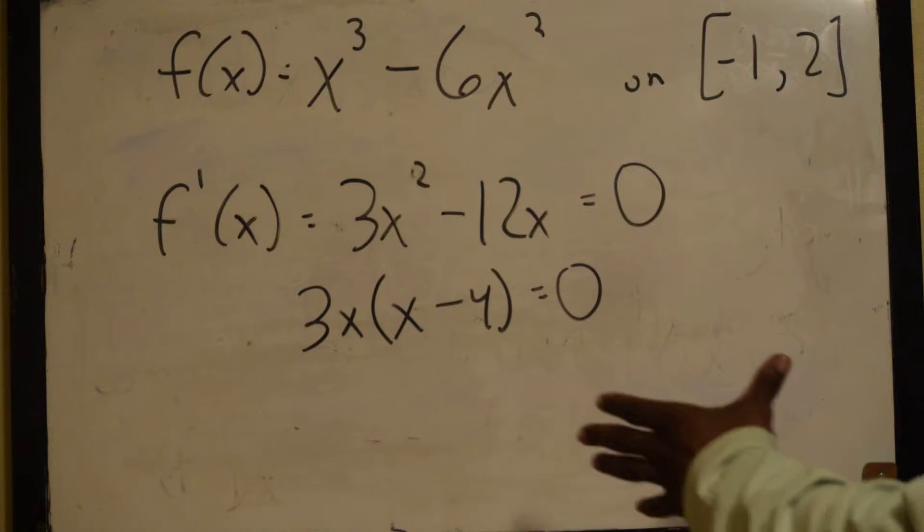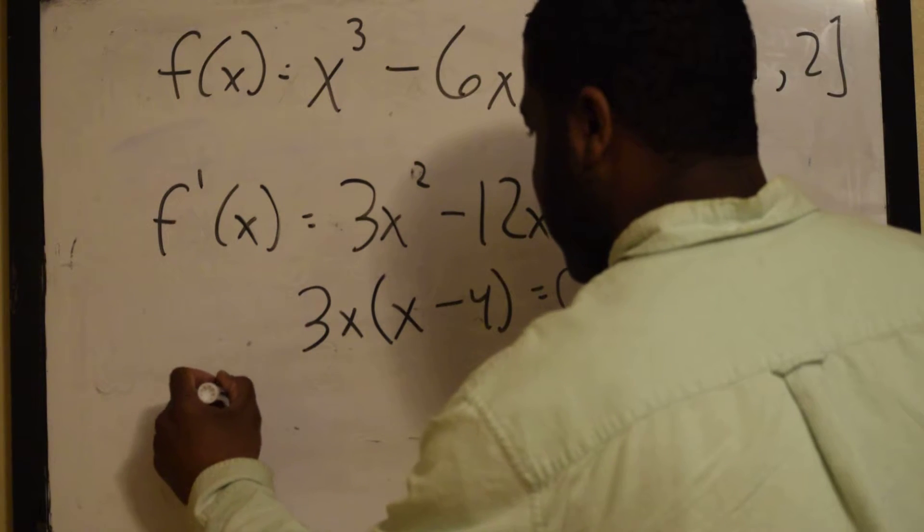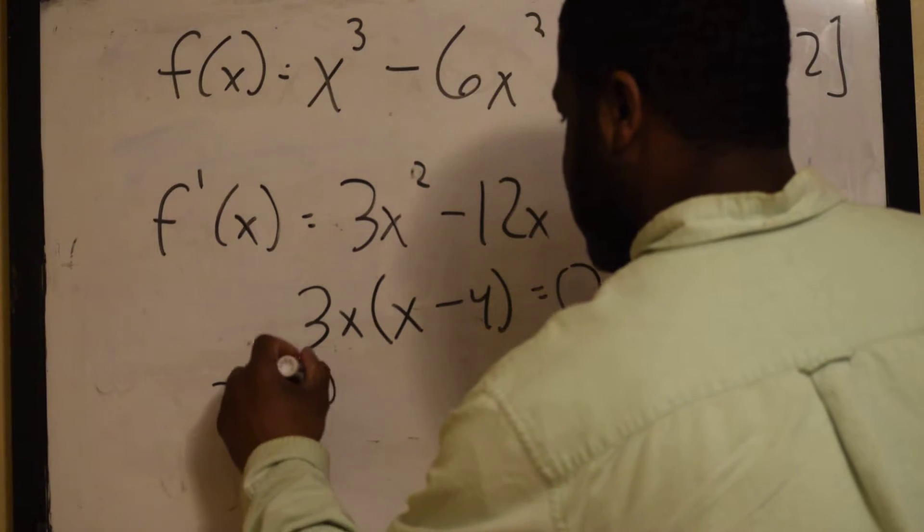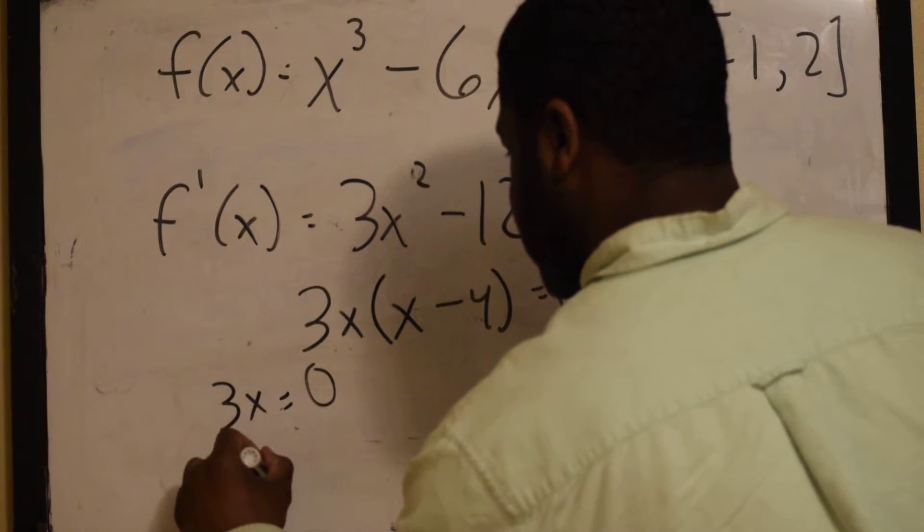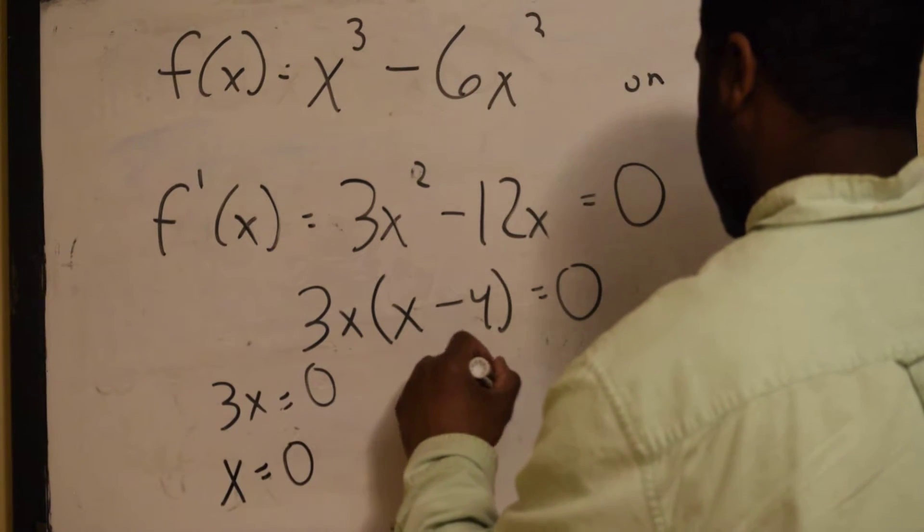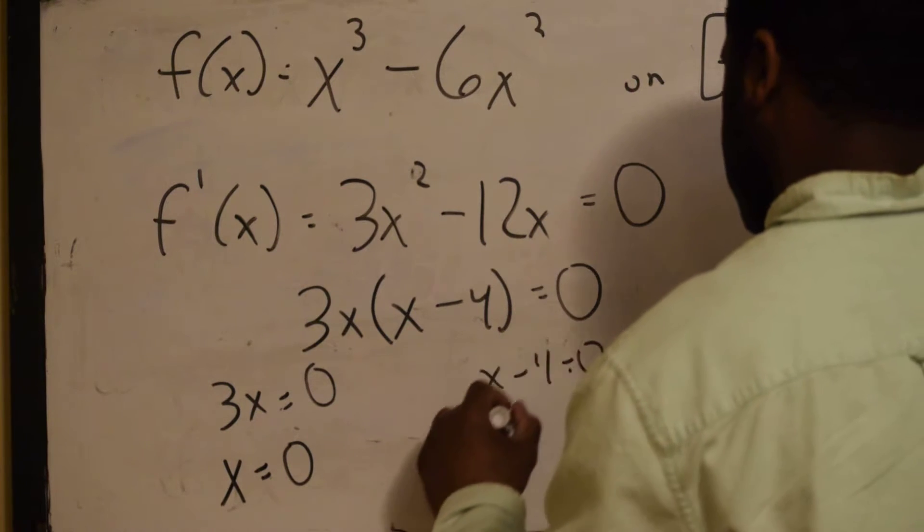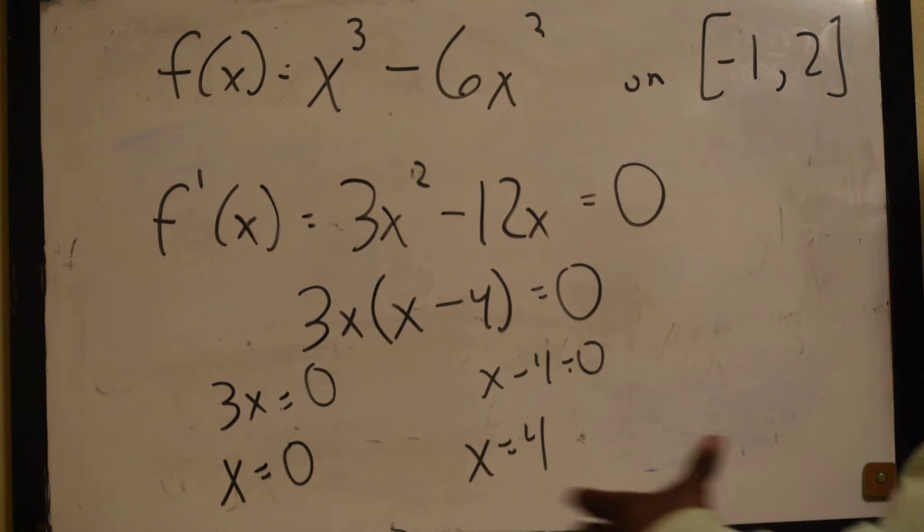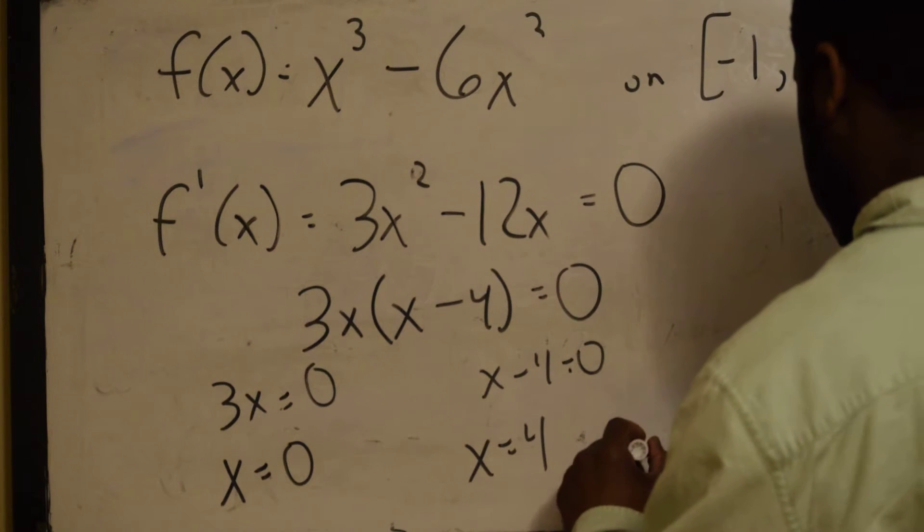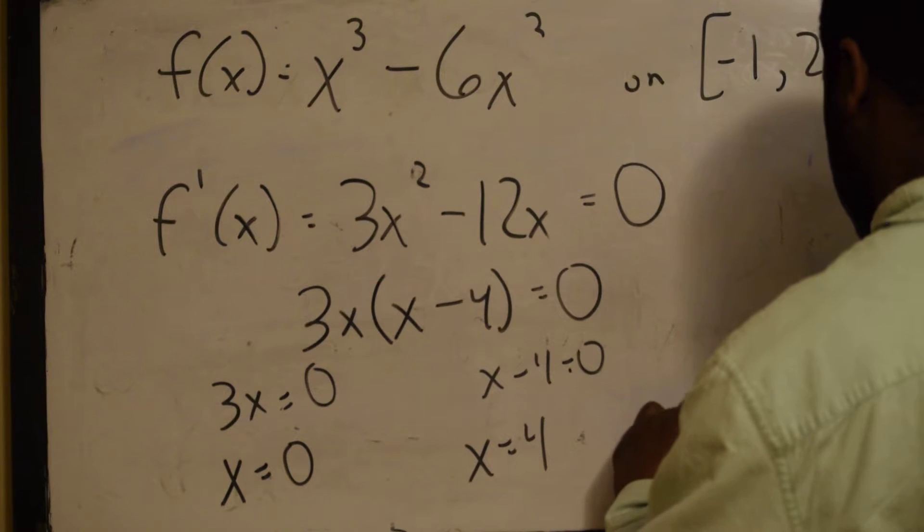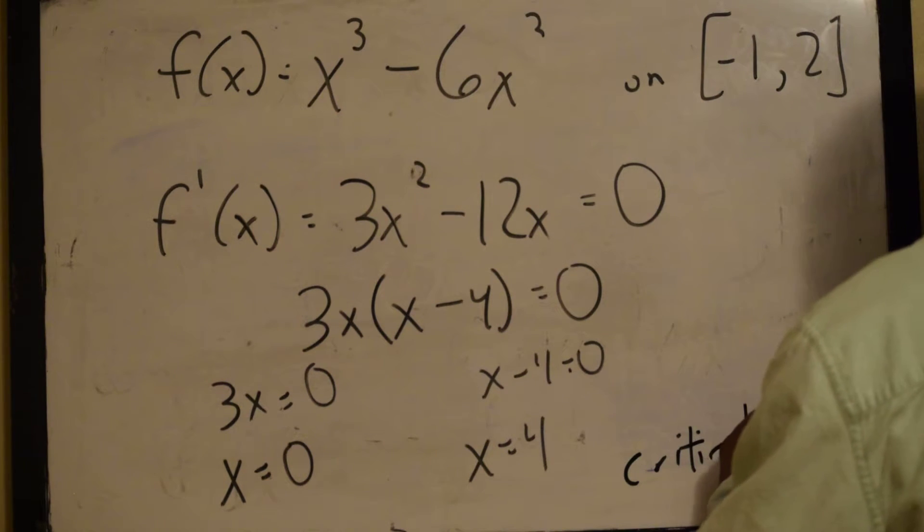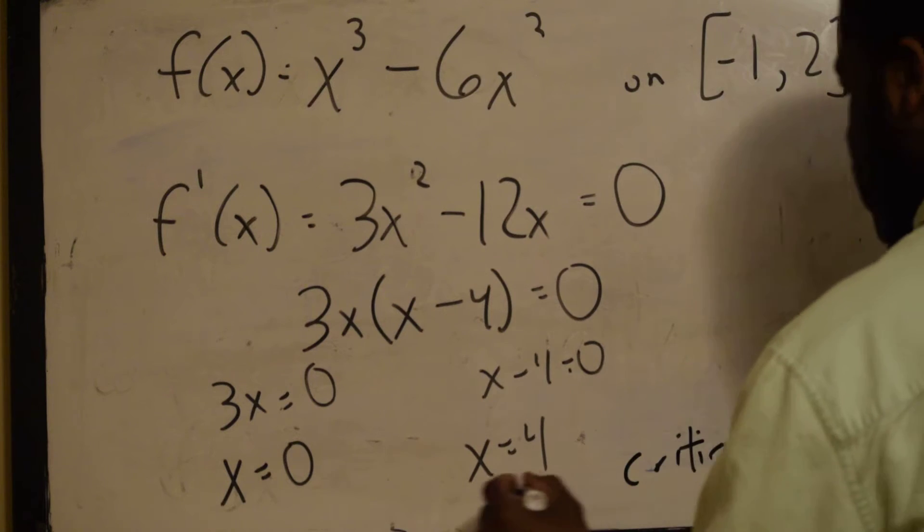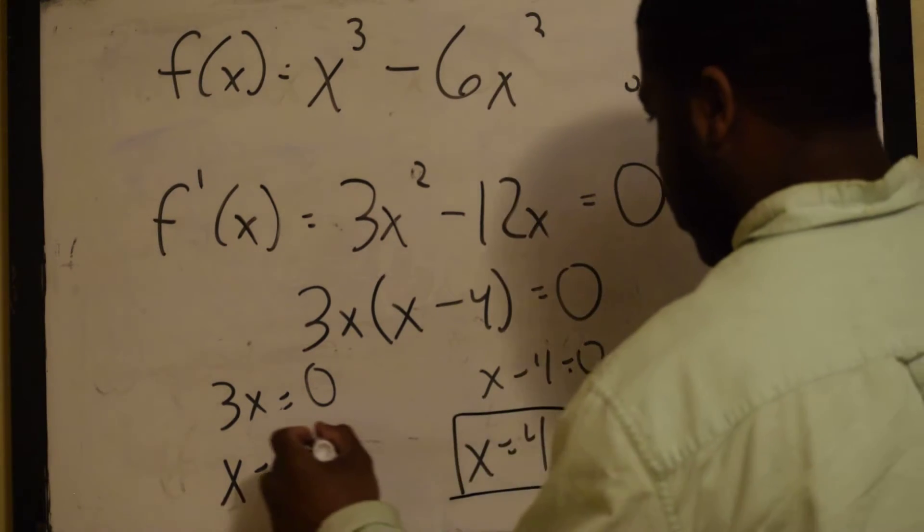Alright, so now we know that 3x is equal to 0, so x is equal to 0. x minus 4 is equal to 0, so x is equal to 4. So, these are our critical points.